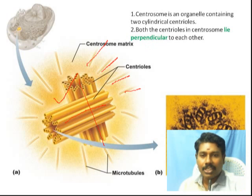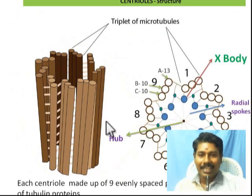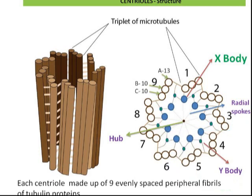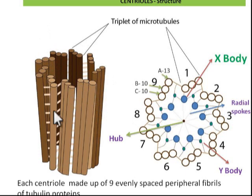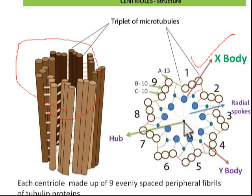Now, the structure of centrioles - there is actually a cart wheel arrangement. This cart wheel structure gives centrioles their characteristic shape. You can see peripheral microfibrils. The cart wheel has a center like an axle. Radial spokes connect the central axle outward to the periphery.